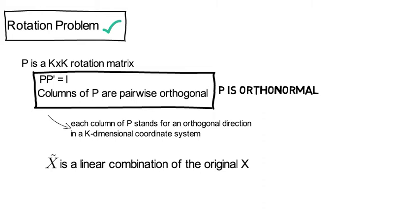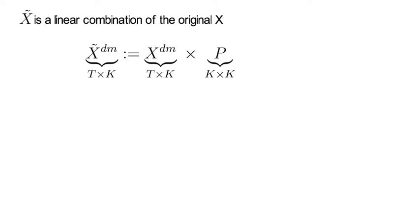Okay, now the implication is that the rotation X tilde is simply a linear combination of the original X. Mathematically it means that we are going to define X tilde dm as the original data X^dm multiplied by this rotation matrix P.